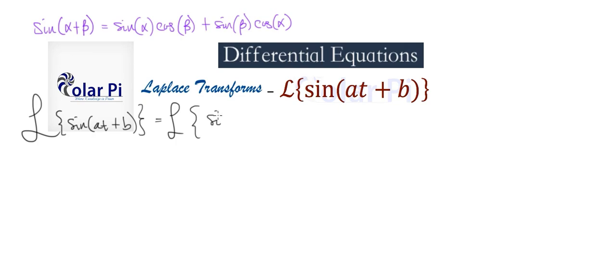sine of alpha is going to be sine of at, and then cosine of beta is going to be cosine of b. And then you see how the rest of it is going to go - sine b is sine of beta right there.